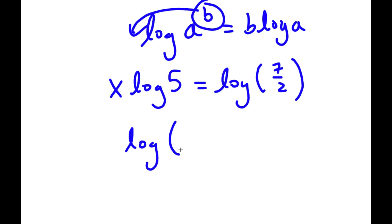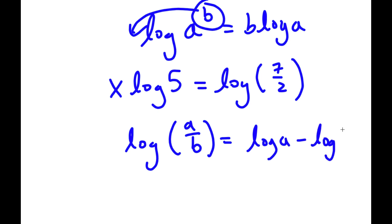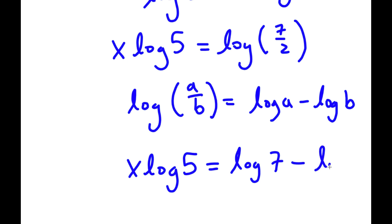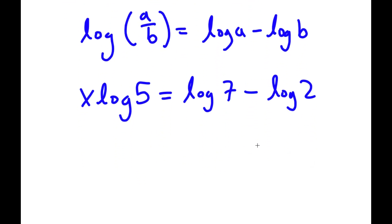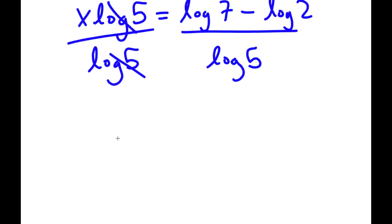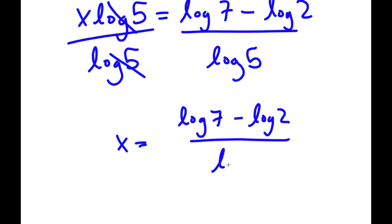Now if I have something in the form log a over b, this is equal to log a minus log b. So log 7 over 2 is going to equal log 7 minus log 2. Now I'm going to divide both sides by log phi, so these two cancel out and I get x is equal to log 7 minus log 2 over log phi.